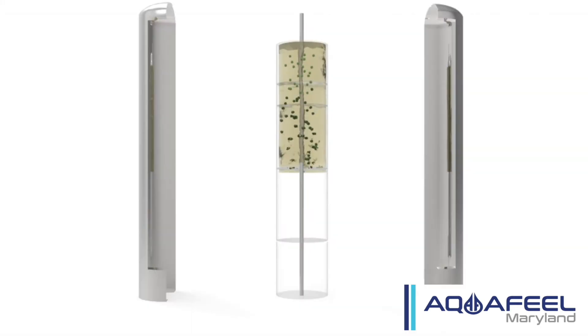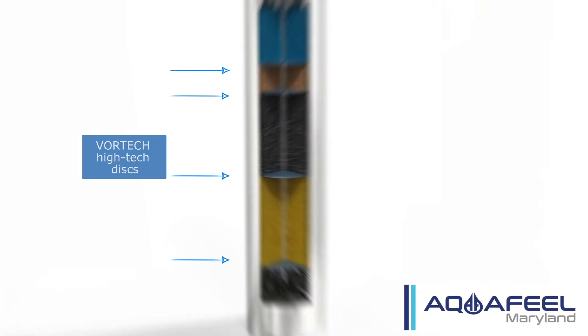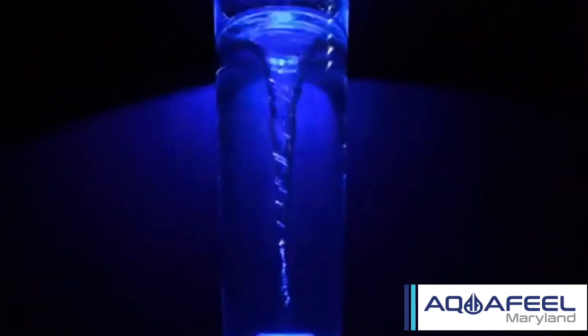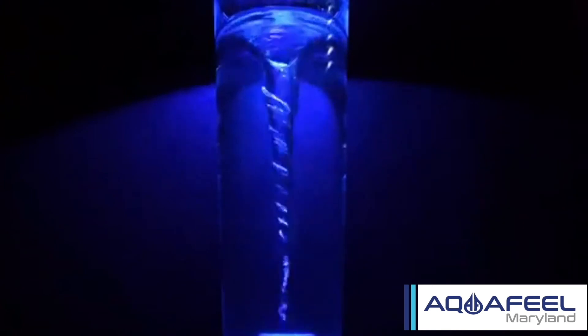The Aquafield system divides each stage with Vortec high-tech discs that guarantee the separation of different media. This is important because it changes the direction of the water and makes it turn in circles, causing the resin to move up.